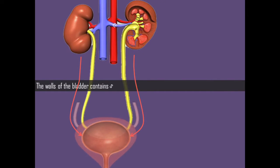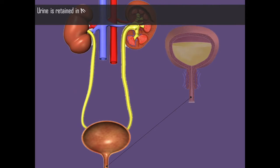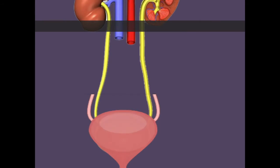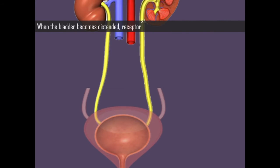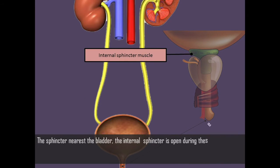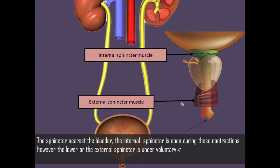The walls of the bladder contain smooth muscle capable of considerable expansion. Urine is retained by two sphincter muscles located at its base, just above the juncture with the urethra. When the bladder becomes distended, receptors in the walls trigger reflexive contractions. The sphincter nearest the bladder, the internal sphincter, is open during these contractions.